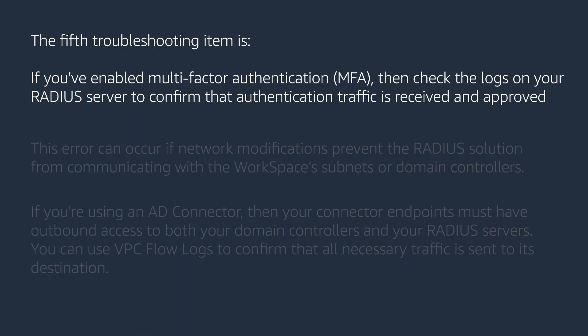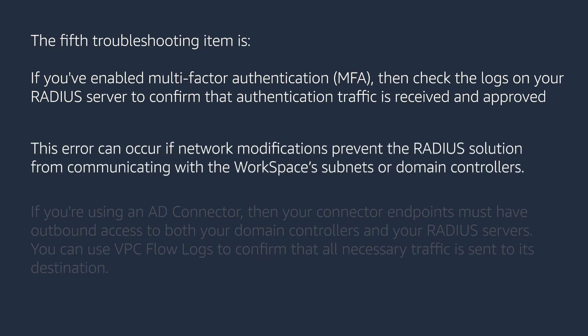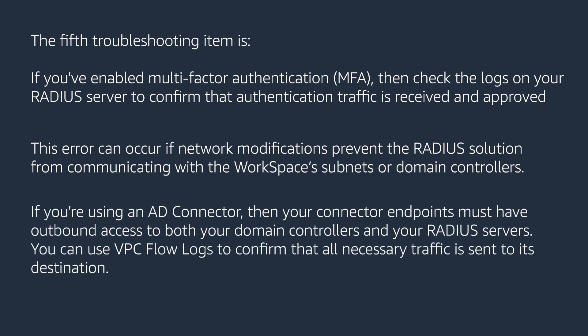The fifth troubleshooting item is, if you've enabled multi-factor authentication, then check the logs on your RADIUS server to confirm that the authentication traffic is received and approved. This error can occur if network modifications prevent the RADIUS solution from communicating with the workspace's subnets or domain controllers. If you're using an AD Connector, then your connector endpoints must have outbound access to both your domain controllers and your RADIUS servers. You can use VPC flow logs to confirm that all necessary traffic is sent to its destination.